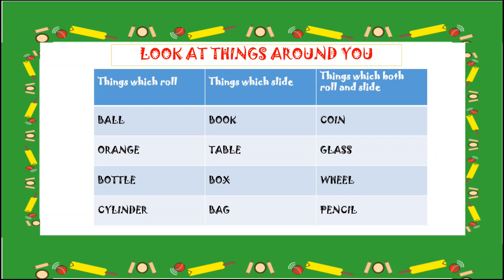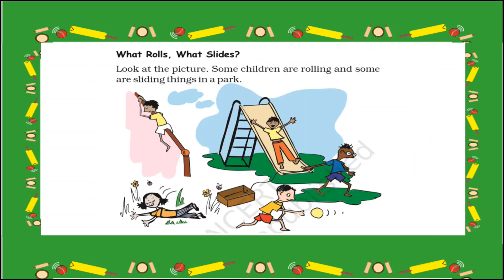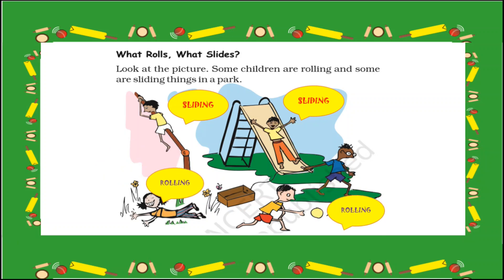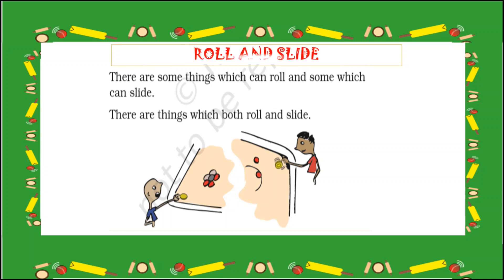Now we are going to learn this through day-to-day life activities. What rolls? What slides? Look at the picture. Some children are rolling and some are sliding things in a park. Guess and tell me, children. Let me show the answers. There are some things that can roll and some things that can slide — roll and slide. We have seen some things which can roll and some which can slide, and here there are things which both roll and slide.